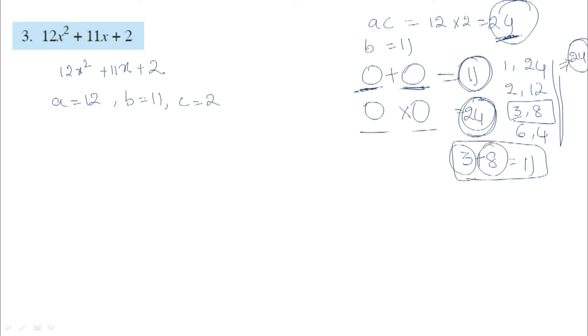So 3 plus 8 equals 11, and 3 times 8 equals 24. The numbers are 3 and 8. We split 11 as 3 and 8.